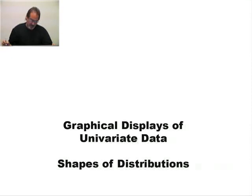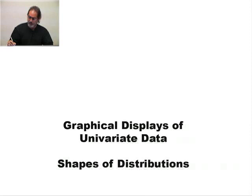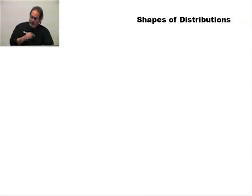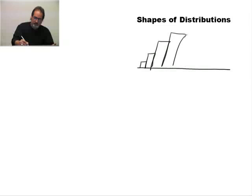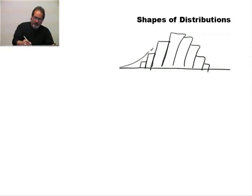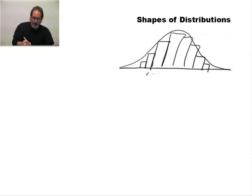Continuing our discussion about graphical displays of univariate data, let's talk a little bit about the different shapes of data that you will come across during your analysis. Suppose you go ahead and do a histogram, collect some data, complete the histogram, and in general the histogram looks kind of like this. If I were to draw just a curve containing the edges here, the general shape of that curve is mound-shaped.